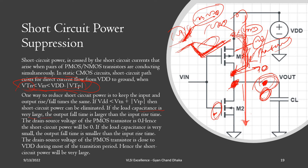To summarize: a large capacitance load reduces short circuit power but introduces large transition delay. A very small load capacitance causes the output node to discharge quickly, leading to short circuit power dissipation. Therefore, we must ensure that the rise and fall delays — meaning the capacitance effects at the input and output — are almost equal. In that case, the input and output transitions are uniform: as the input rises, the output falls in the same manner, reducing the short circuit power effect.